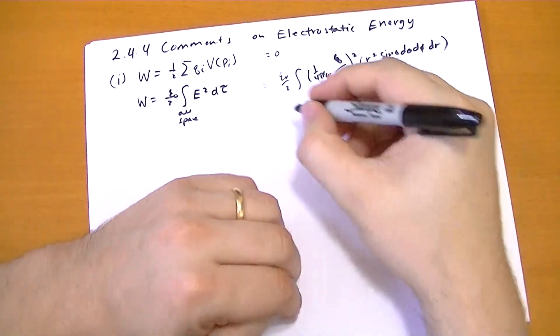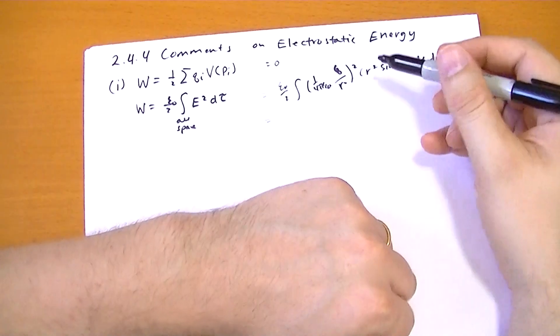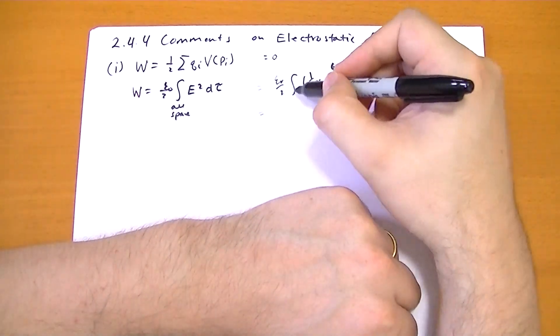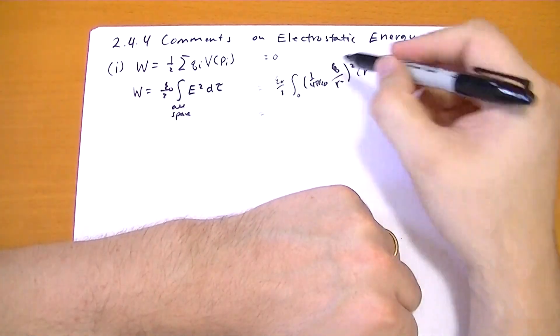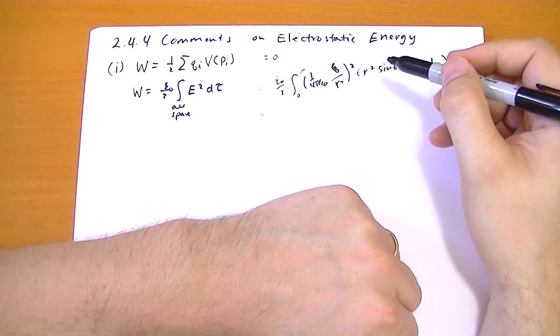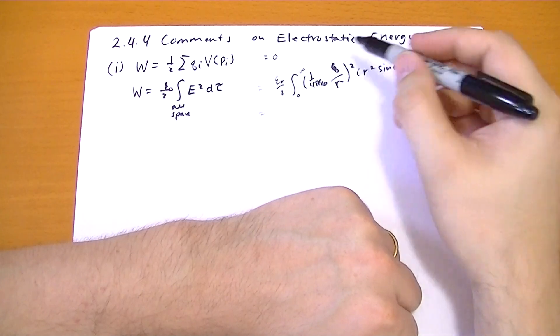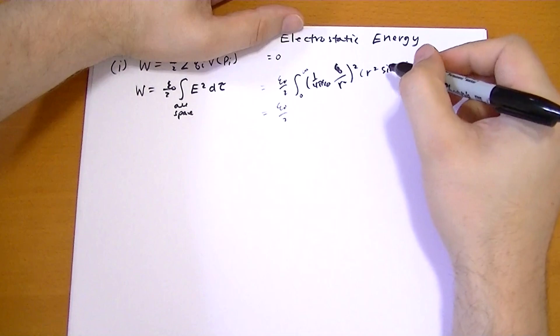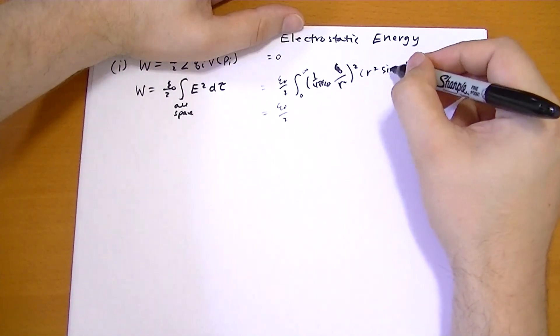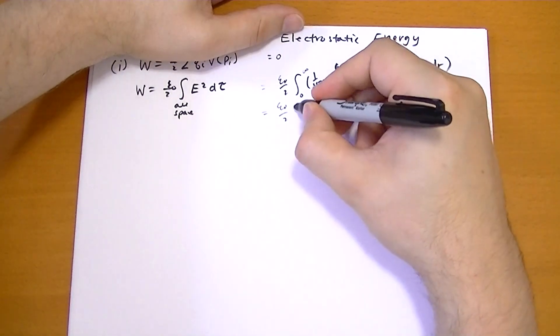So really quickly by inspection, we see that the energy here is all space. So we're going from zero to infinity for r. So we basically get over 2, r squared has to stay there, sine theta d theta d phi, that's just 4 pi.